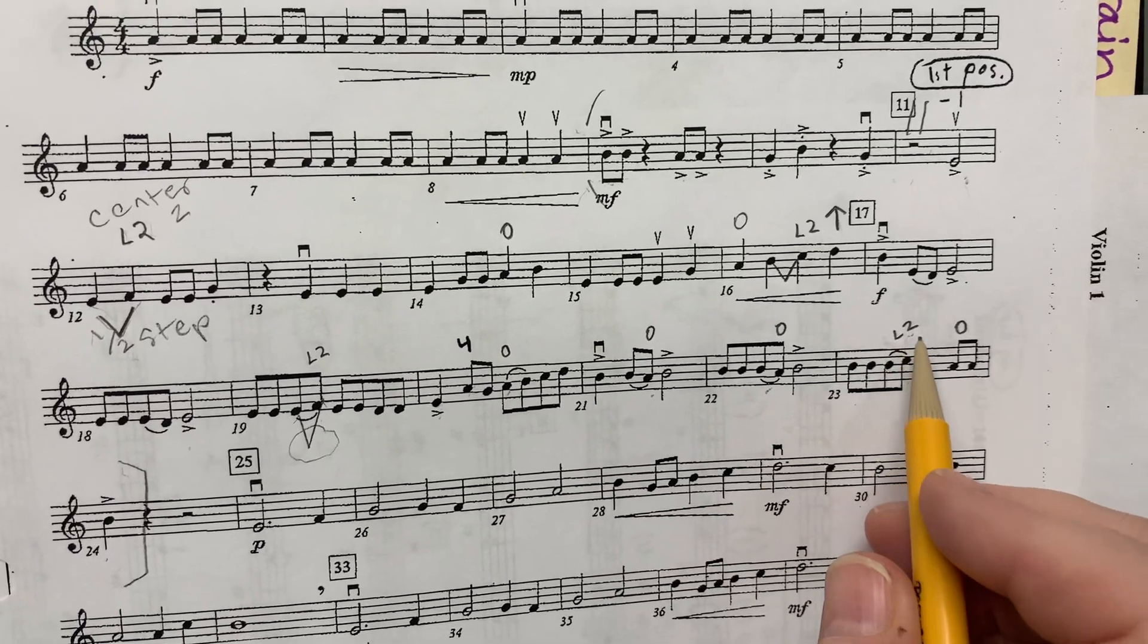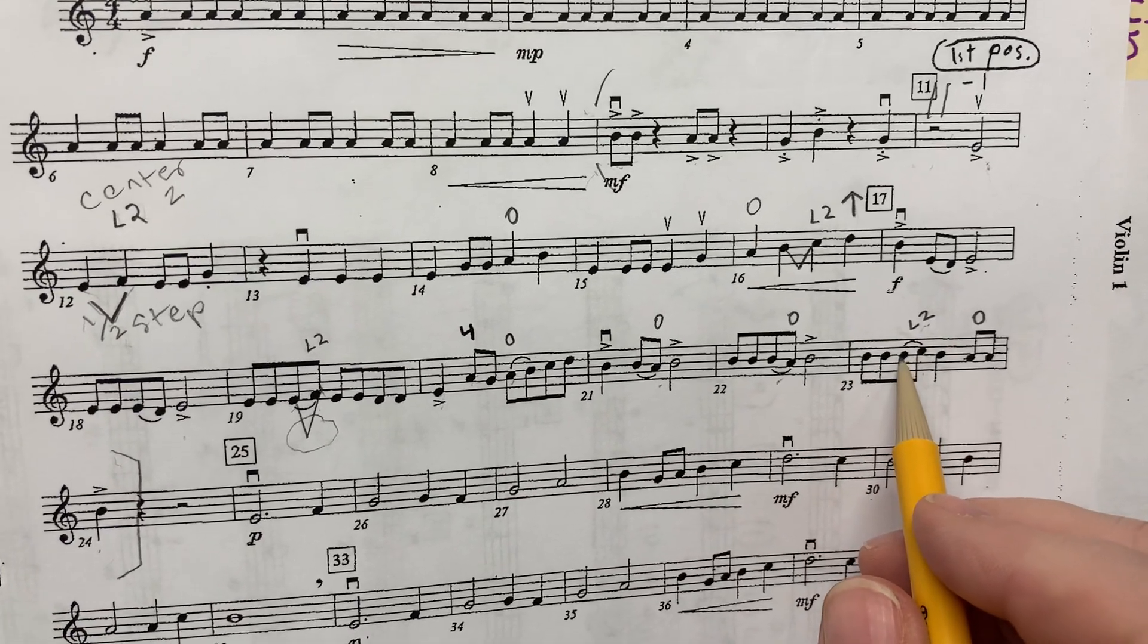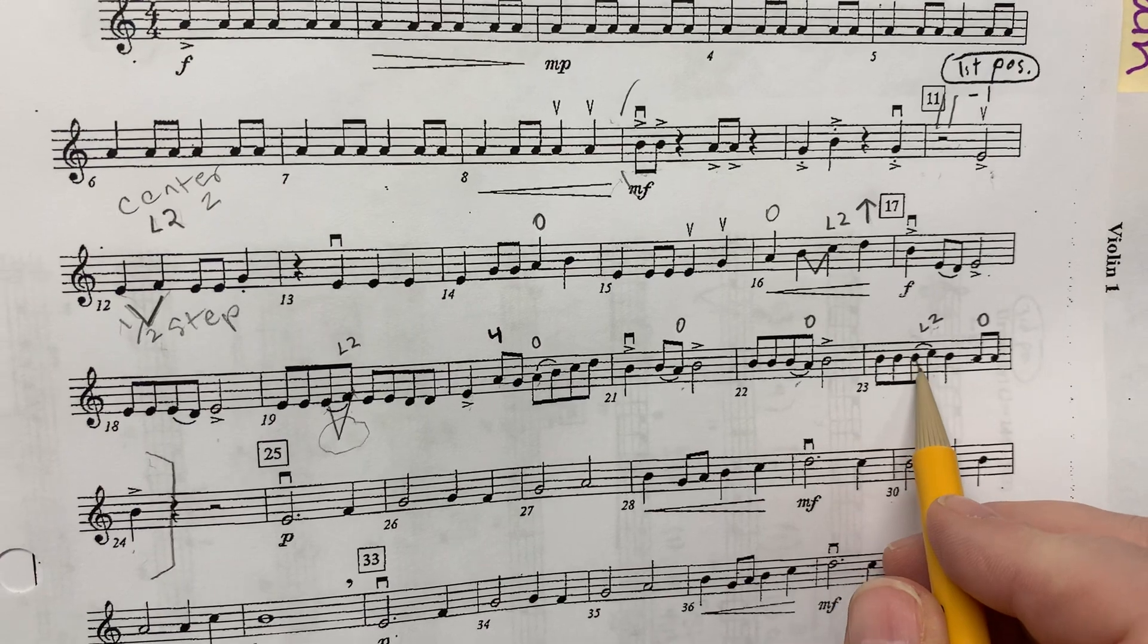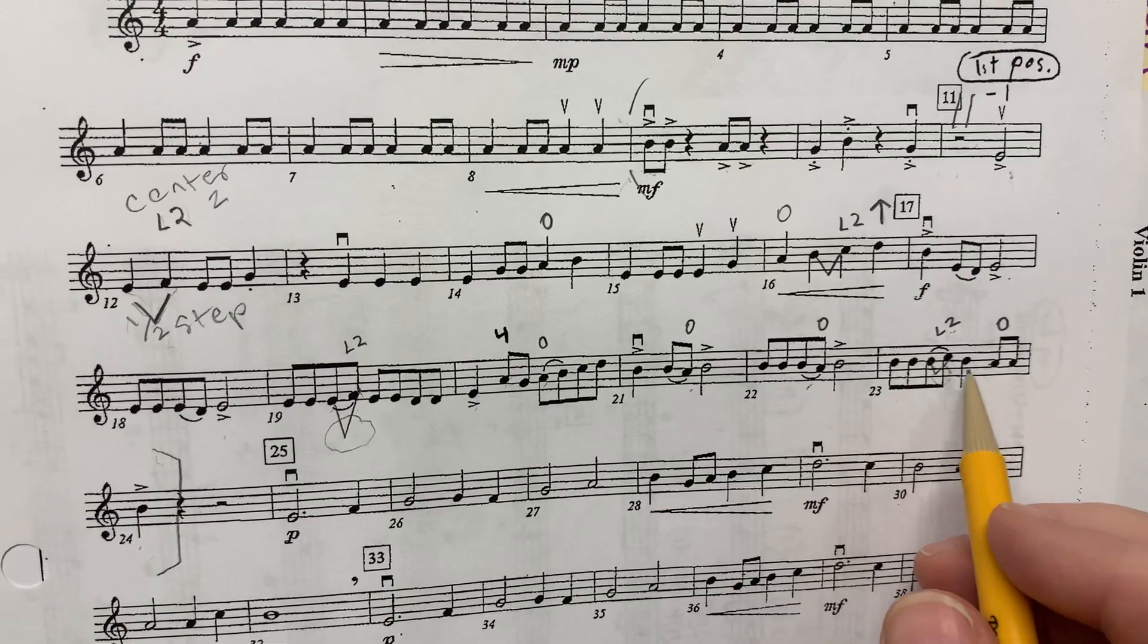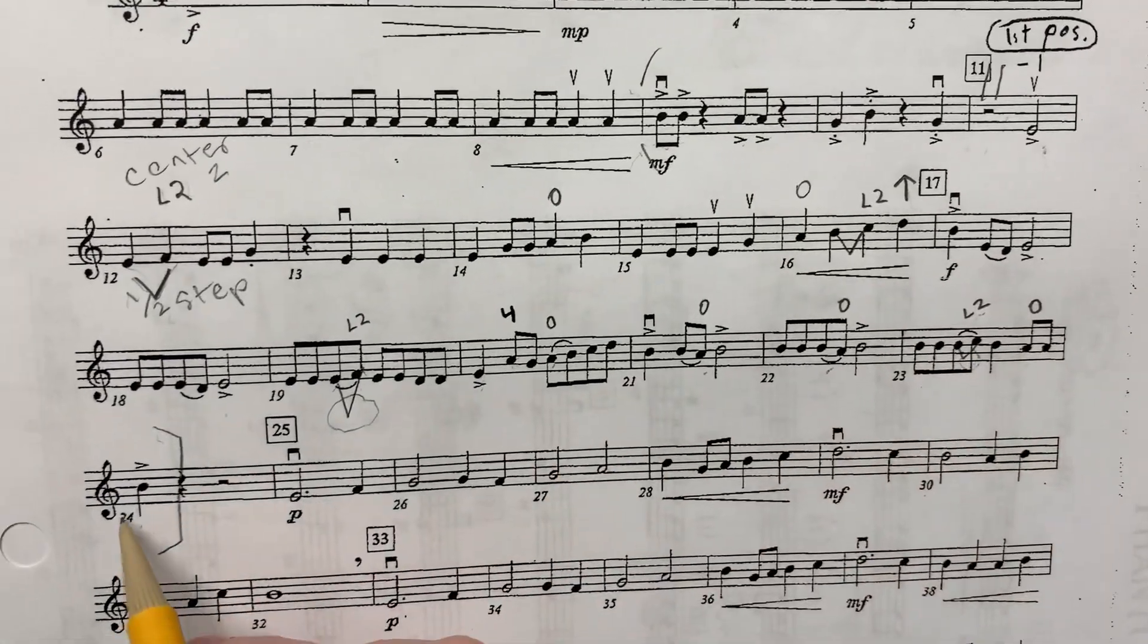23, mark your low two for C natural. Draw your half-step. Remember that it has to come to a point here at the bottom. Open A, and we're ending on the B.